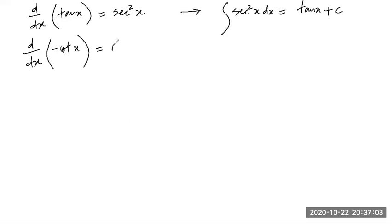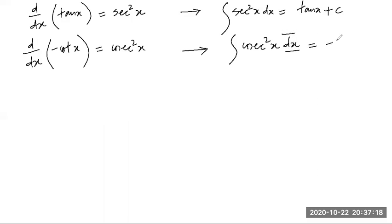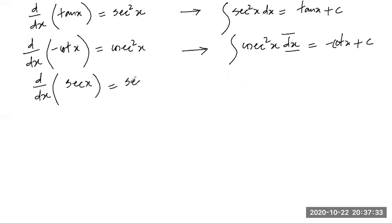∫cosec²x dx = −cot x + C — the constant of integration is important. Since d/dx of sec x = sec x · tan x, we have ∫sec x · tan x dx = sec x + C. In all these cases, when the derivative of a function is given, the integration process helps us find the original function.